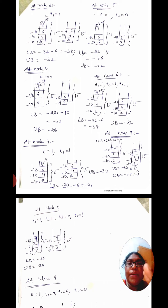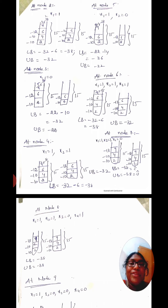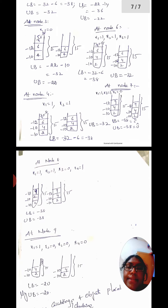For the upper bound at node 3, fractions are not allowed. With x1 equal to 0, we place object 2 with profit minus 10 and weight 4, and object 3 with profit minus 12 and weight 6. Upper bound equals minus 10 plus minus 12 equals minus 22.